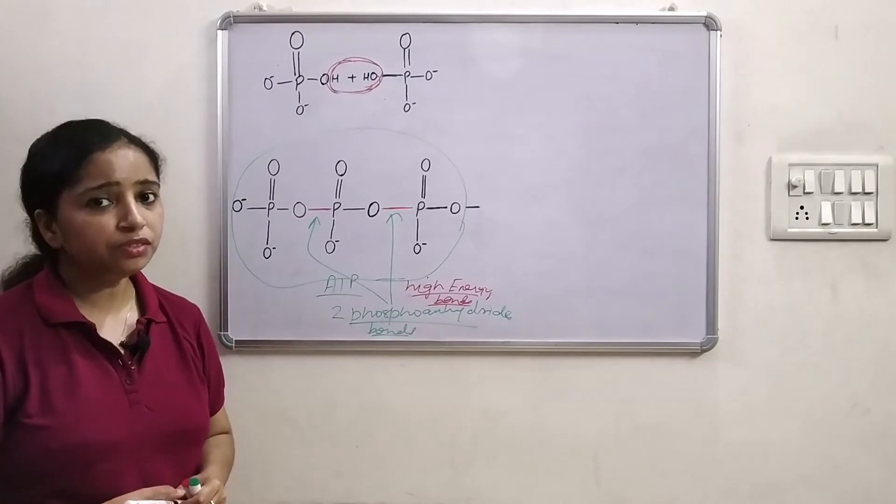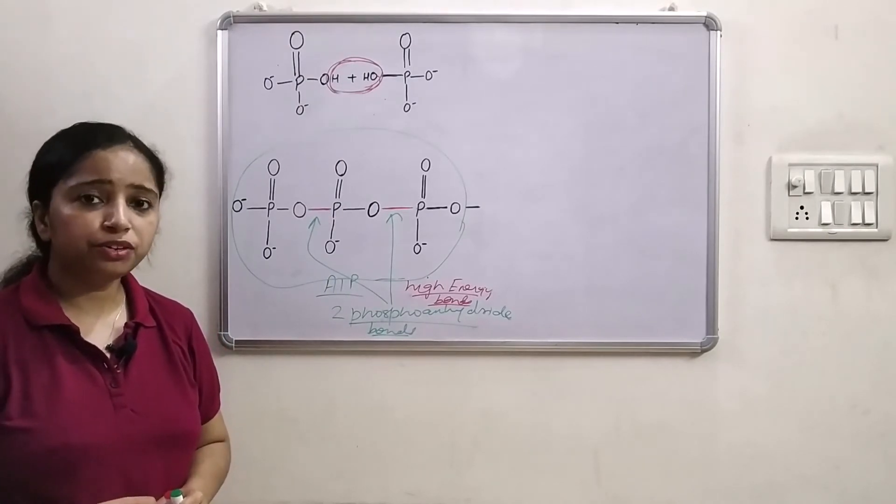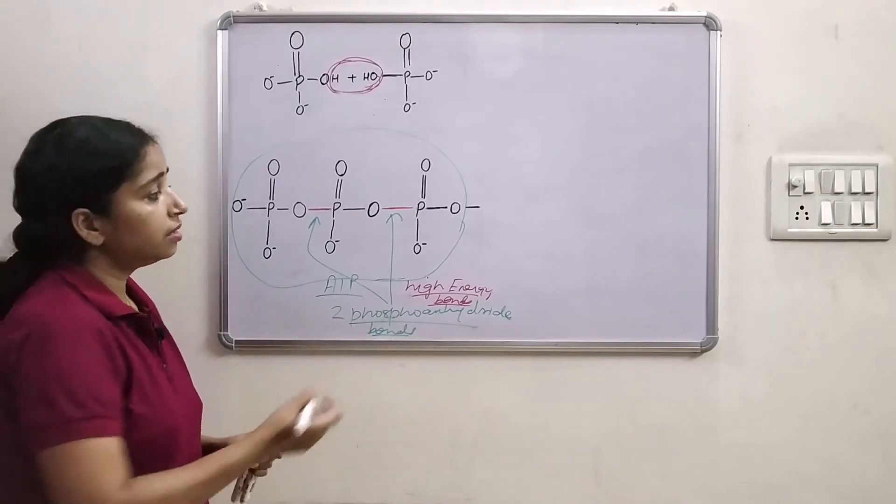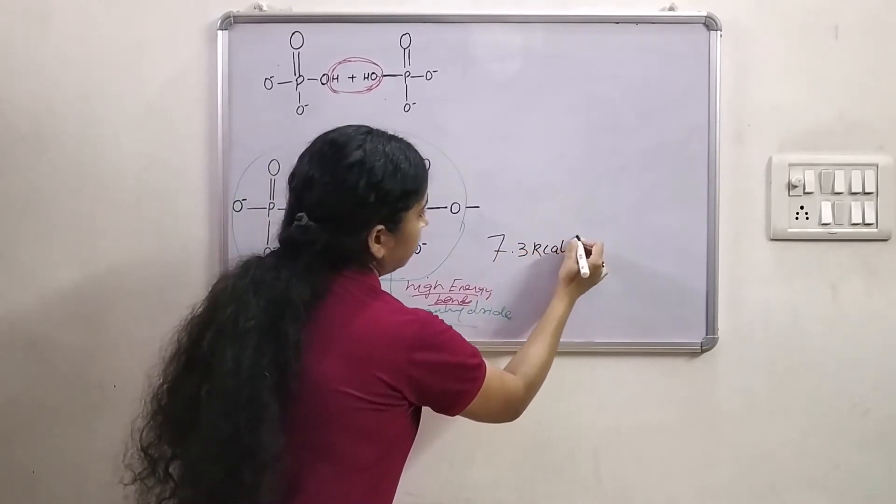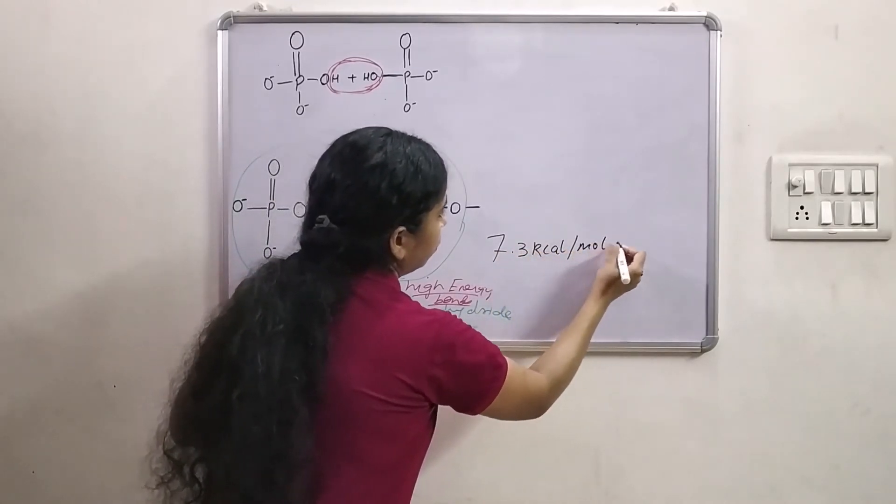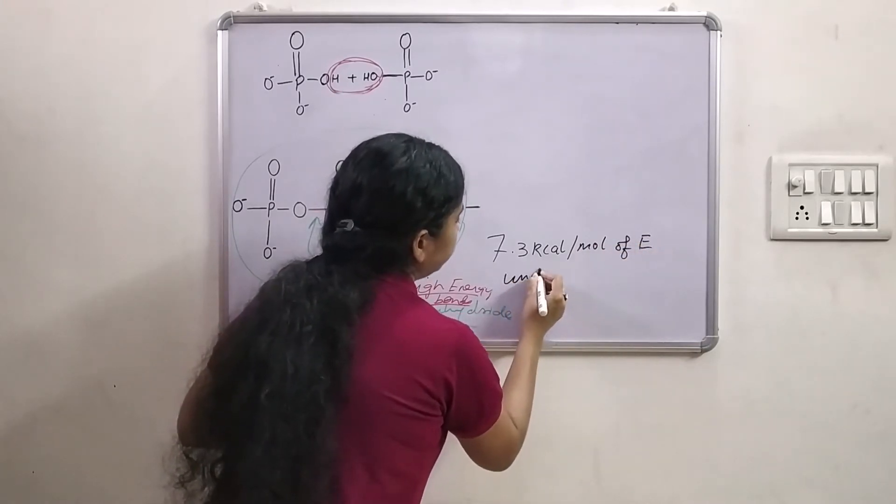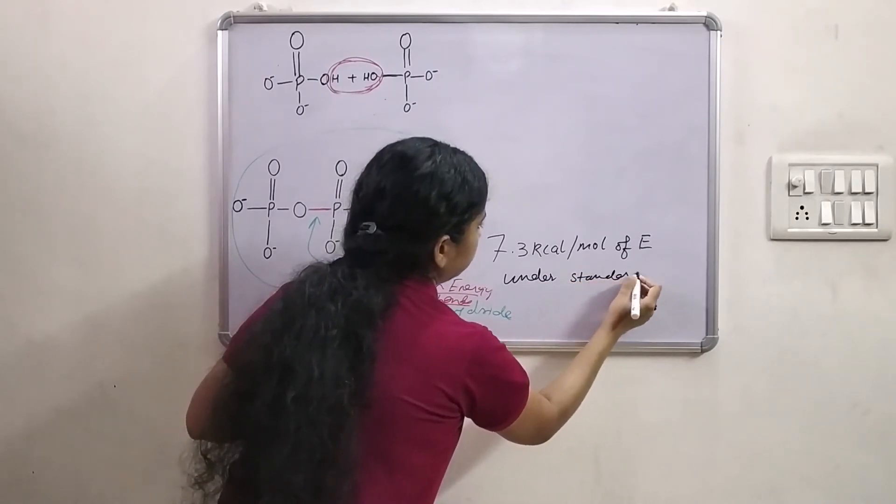So these phosphoanhydride bonds are high energy bonds. And hydrolysis of a phosphoanhydride bond releases 7.3 kilocalorie per mole of energy under standard conditions.